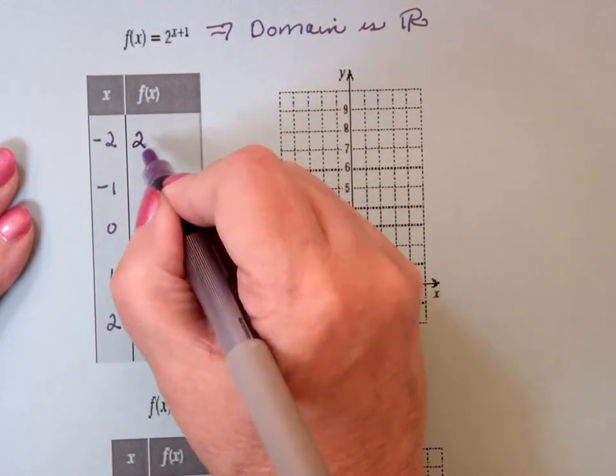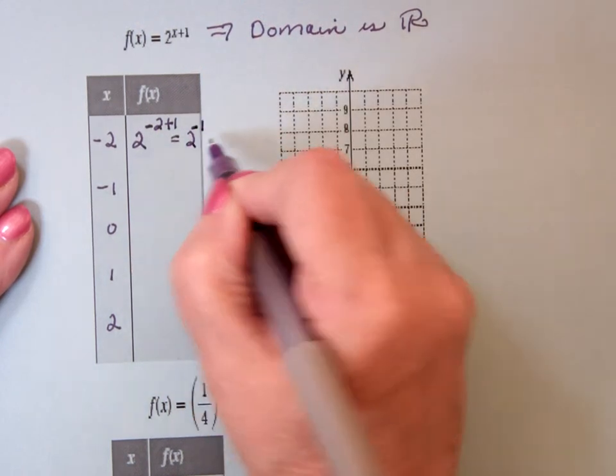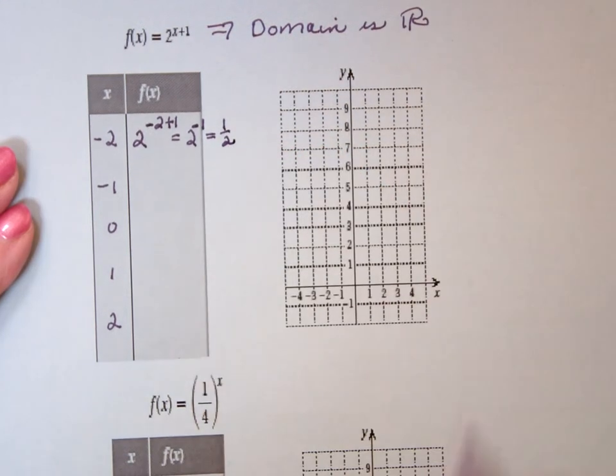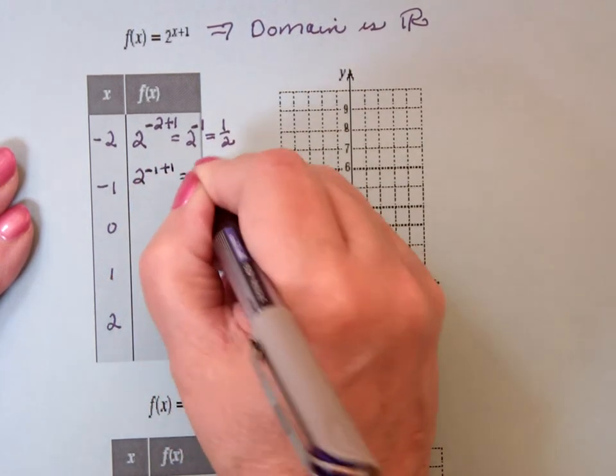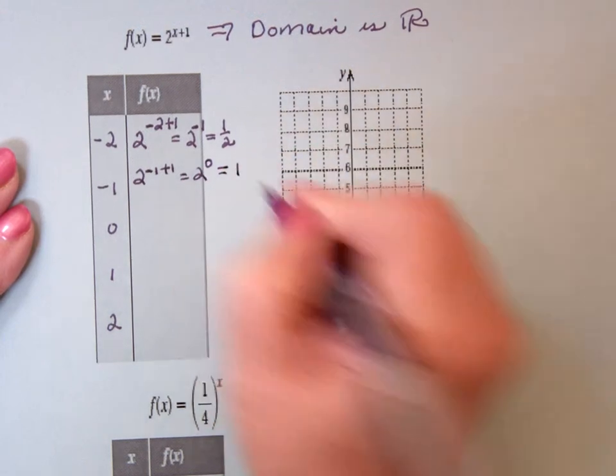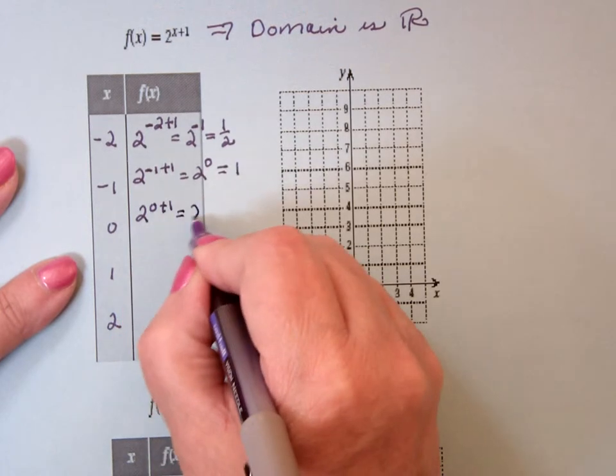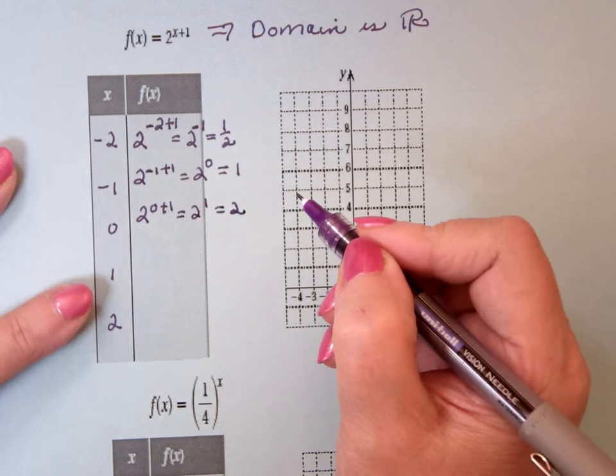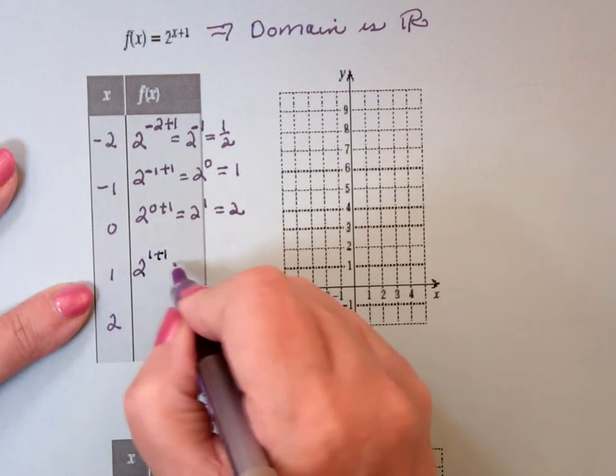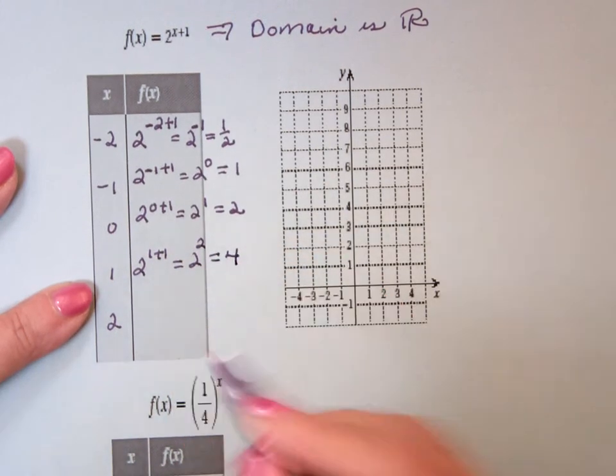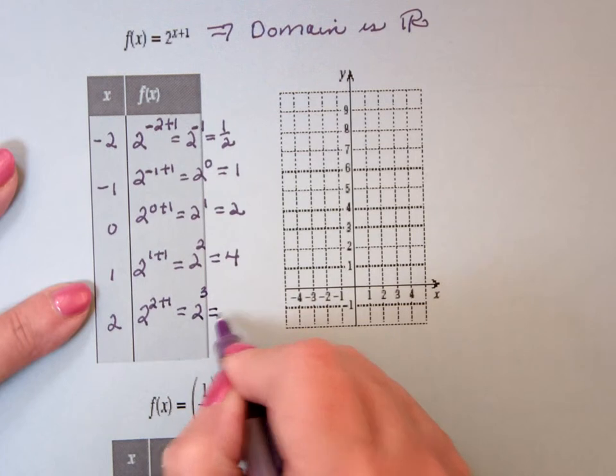And then this would be 2, x is negative 2. So this is negative 2 plus 1, which is 2 to the negative 1, and 2 to the negative 1 is 1 half. 2 to the negative 1 plus 1 is 2 to the 0. 2 to the 0 is 1. 2 to the 0 plus 1 is 2 to the 1 or 2. See, I just put in x, get out y, and do the calculation. 2 to the 1 plus 1 is 2 to the 2, which is 4. And 2 to the 2 plus 1 is 2 to the 3, which is 8.